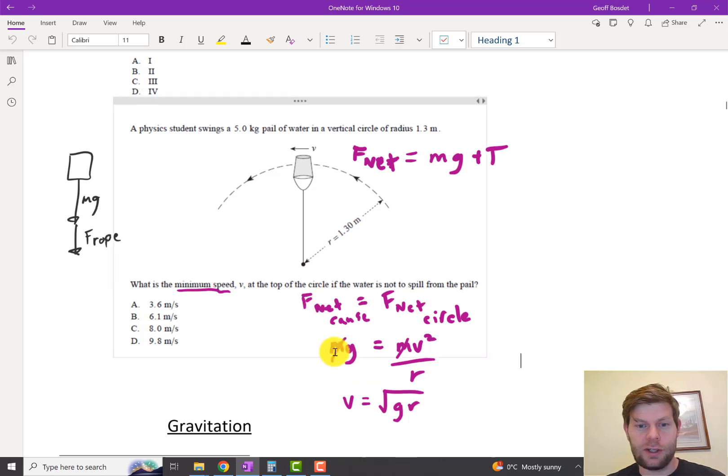Just at the minimum speed, your F-net-cause is mg for whatever reason. Like in this case with the bucket, it's gravity plus the rope at higher speeds, and then at the minimum speed it's just gravity. For a roller coaster, it'd be the normal force of the rails or seat pushing down on you plus gravity at the top. But if you're going at the minimum speed, it would just be gravity.